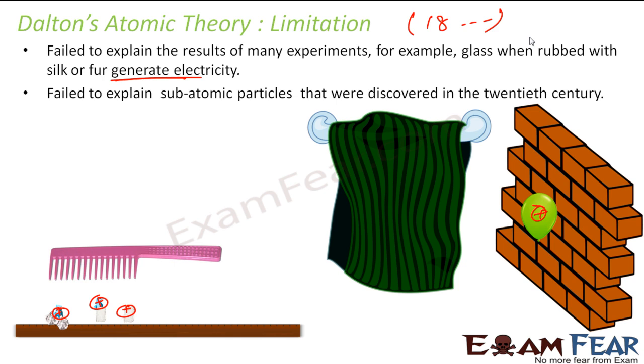Also, since there was a charge, this led the scientific community to think - from where this charge is coming? And they thought a lot, and then with experiments they found subatomic particles - subatomic particles are nothing but electron, proton, and neutron. These particles were found.